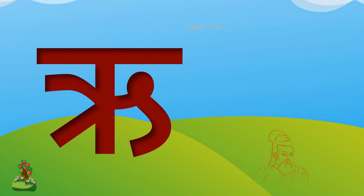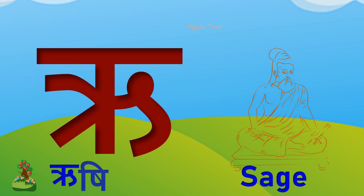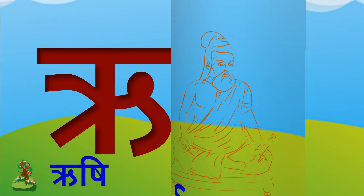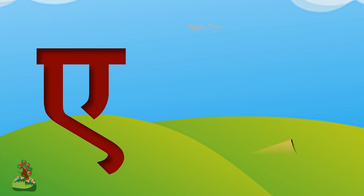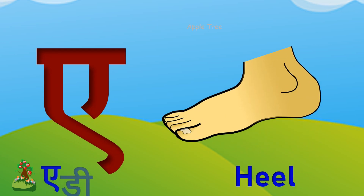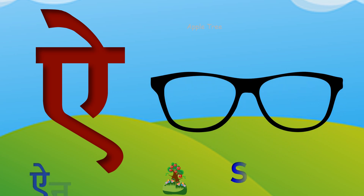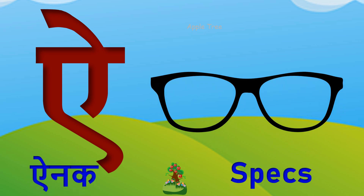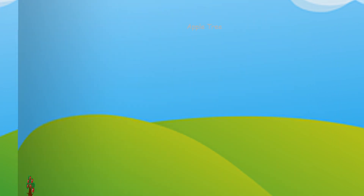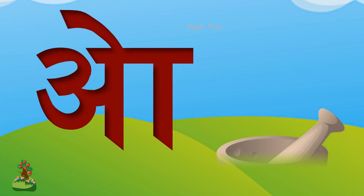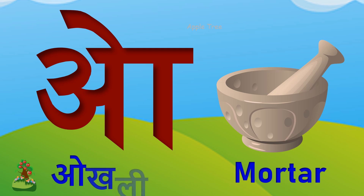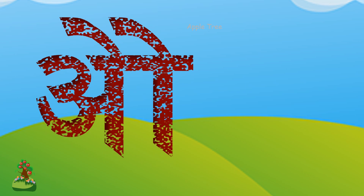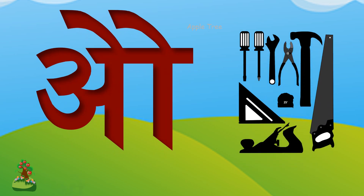ऋ, ऋ से ऋषि। ए, ए से एड़ी। ऐ, ऐ से ऐनक। ओ, ओ से ओकली। औ, औ से औजार।